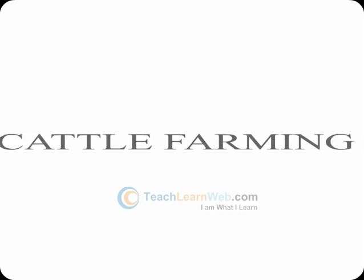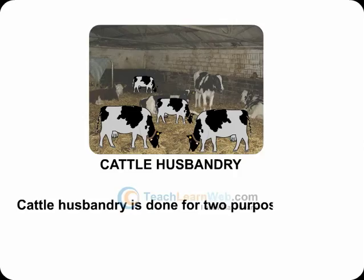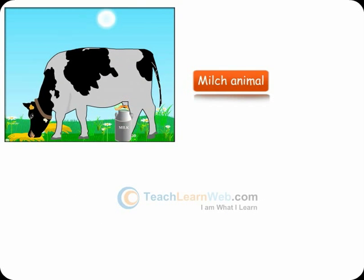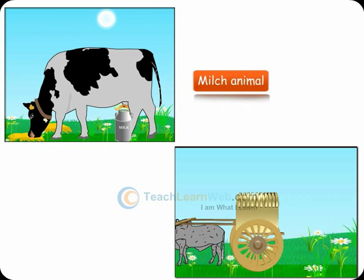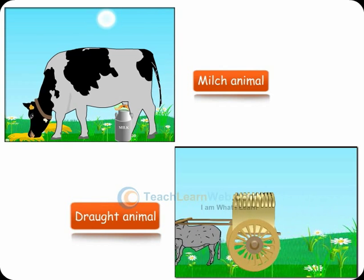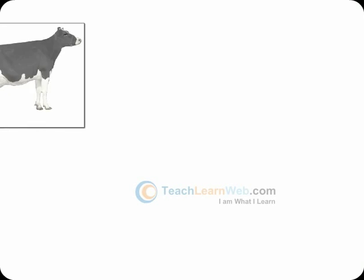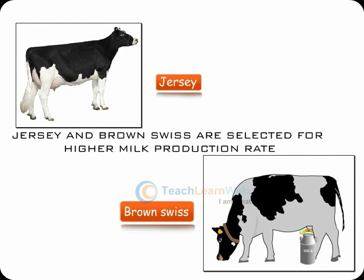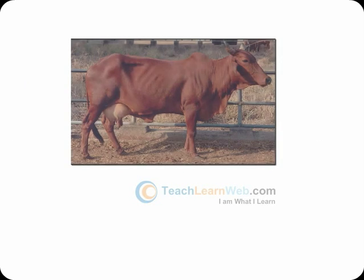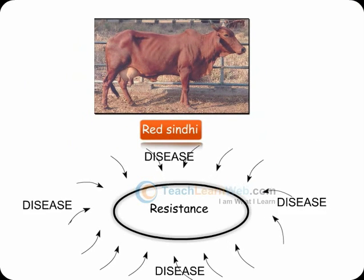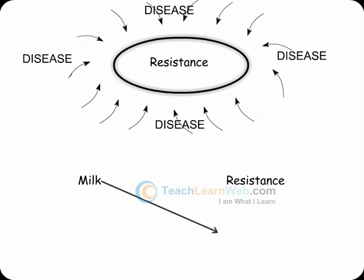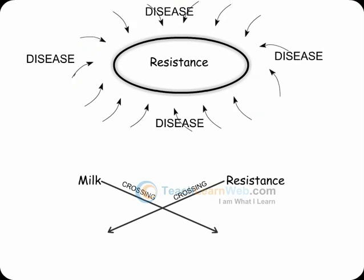Cattle husbandry is done for two purposes: milk and drought labour. Milk-producing animals are called milch animals, while the ones used for farm labour are called drought animals. Foreign breeds like Jersey and Brownsville are selected for higher milk production. Local breeds like Red Sindhi show excellent resistance to diseases. Both can be crossed to produce a new variety with desired qualities.